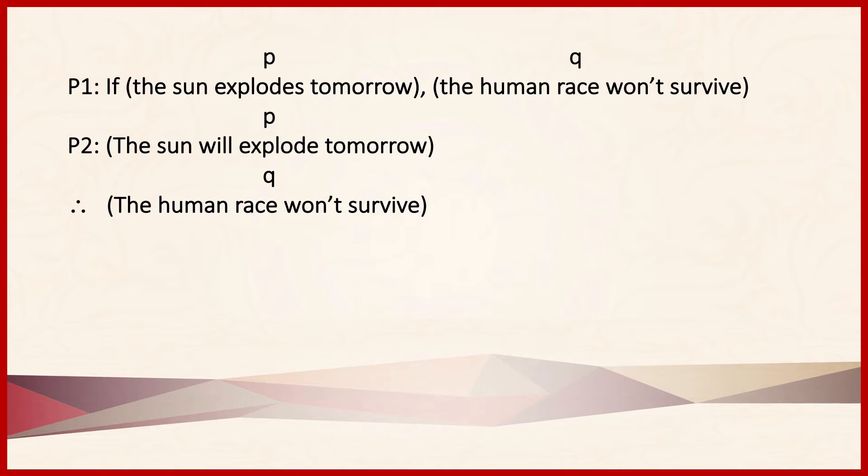Notice that 'the sun explodes tomorrow,' which appears as the antecedent of the first premise and appears as the second premise, is labeled P. While 'the human race won't survive,' which is the consequent of the first premise and the conclusion, is labeled Q. If we write this argument out symbolically and compare it to our chart, we find that the argument is a valid modus ponens.